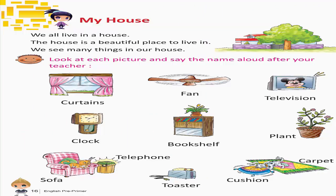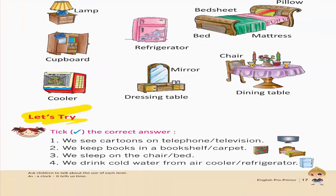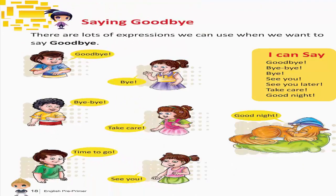My house. We all live in a house. The house is a beautiful place to live in. We see many things in our house. Look at each picture and say the name aloud: Curtains, Fan, Television, Clock, Bookshelf, Plant, Telephone, Sofa, Toaster, Cushion, Carpet, Lamp, Refrigerator, Bed Sheet, Bed, Pillow, Mattress, Cupboard, Cooler, Mirror, Dressing table, Chair, Dining table. Let's try. Take the correct answer.